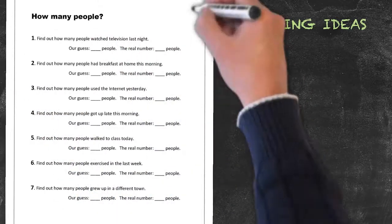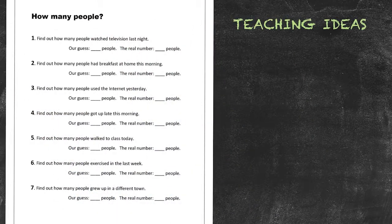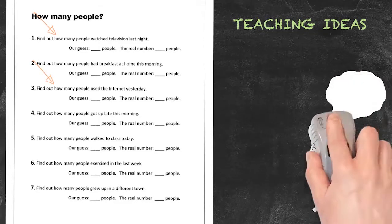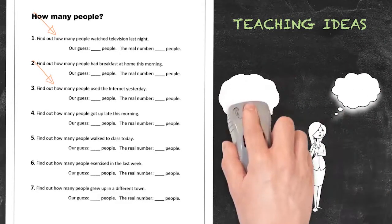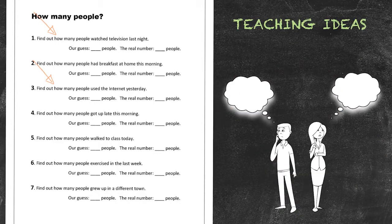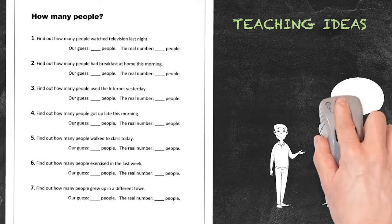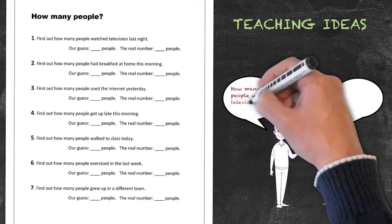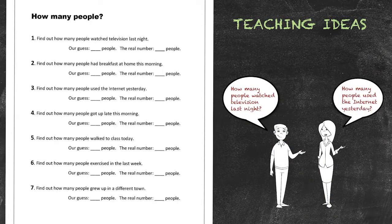In this mill drill activity for the past simple tense, we'll be using a two stage activity. Basically, first we'll have our students guess how many people did a certain thing in the past. Our first example here is to find out how many people watched television last night. Number three, find out how many people used the internet yesterday. So again, we'll have our students guessing the number of people who did that in the class. Once that's finished, we'll have our students get up and go around polling the class, asking how many people watched television last night, how many people used the internet yesterday, so on and so forth.